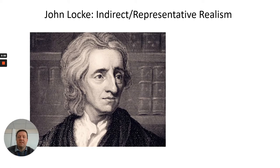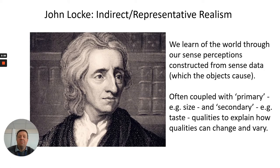John Locke develops indirect or representative realism, and he basically argued that we learn of the world through our sense perceptions that are constructed from sense data. These sense data are caused by the mind-independent world, and Locke makes a famous distinction that you all need to know about between primary and secondary qualities, which I will come to in more detail later. This distinction between primary and secondary qualities can explain how perceptions vary between individuals — something that direct realism was unable to cope with.